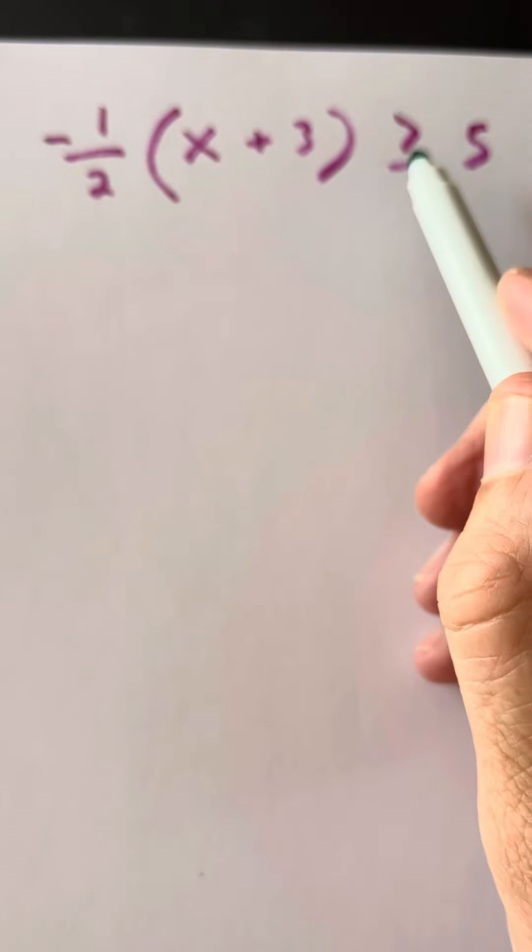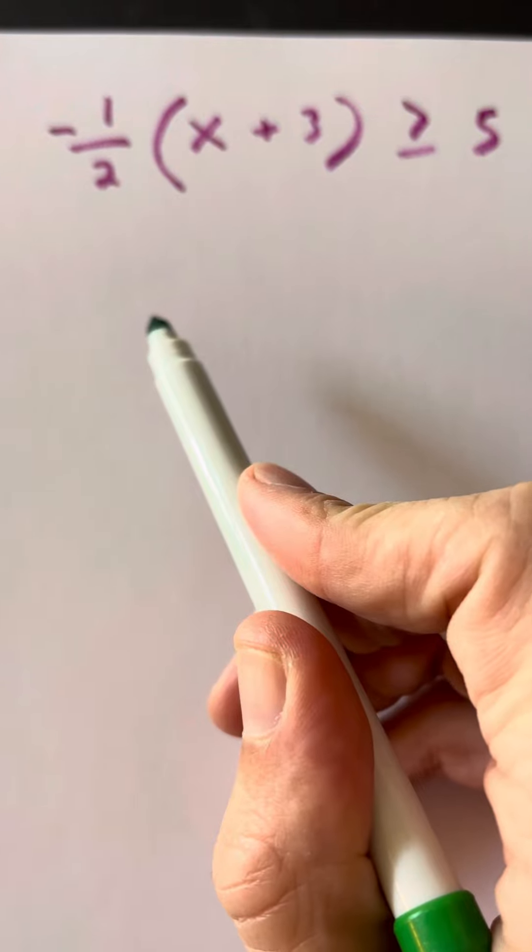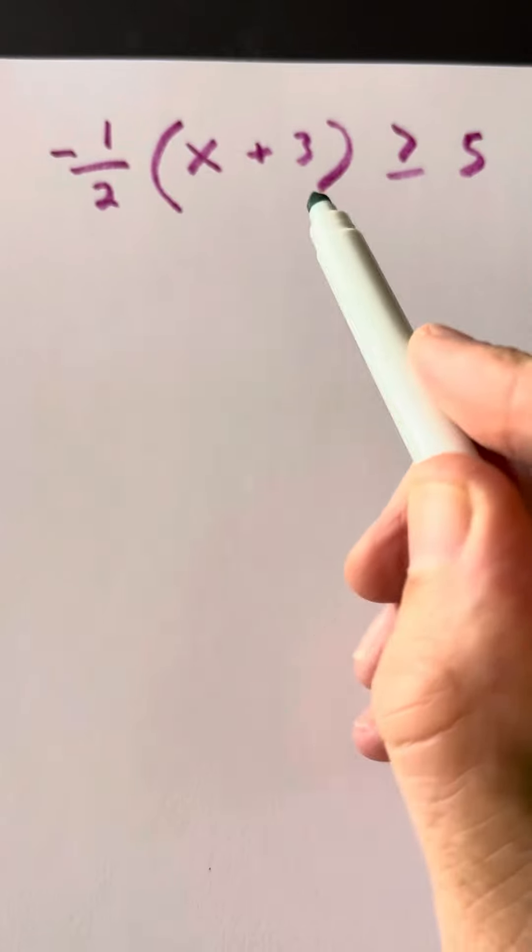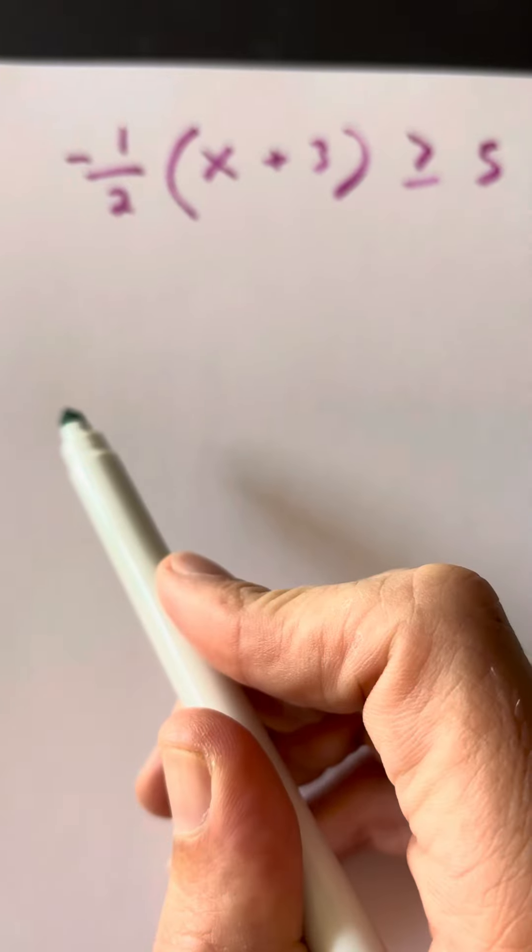When we solve an inequality the same way we would solve an equation, the only thing we have to remember is that if we divide or multiply both sides by a negative, we're going to flip the symbol.